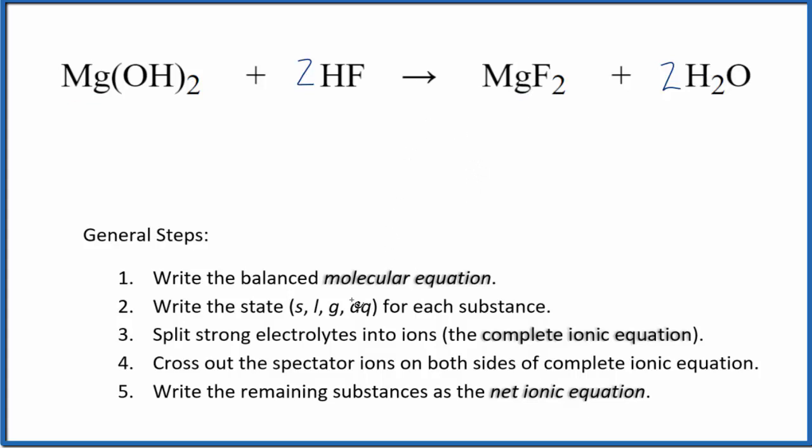Bit of work there. Now we can write the state for each substance. Magnesium hydroxide is insoluble—very little will dissolve—so that's a solid. HF is considered a weak acid, but it still dissolves; it's aqueous, it just doesn't dissociate much. Magnesium fluoride is insoluble, so it's a solid, and then we have water, which is a liquid.